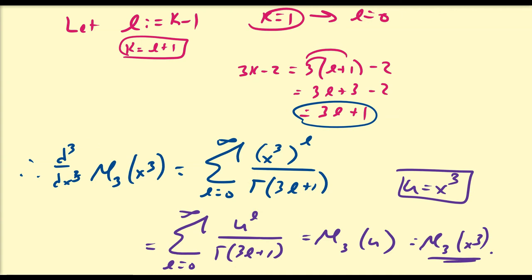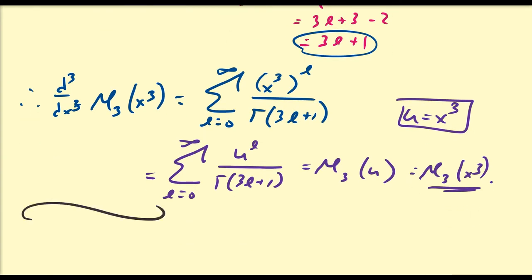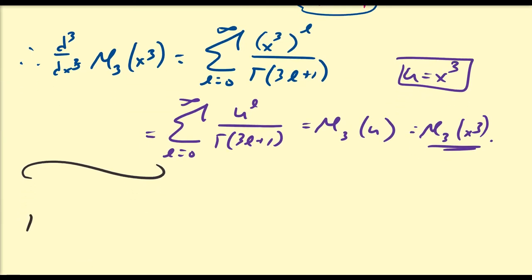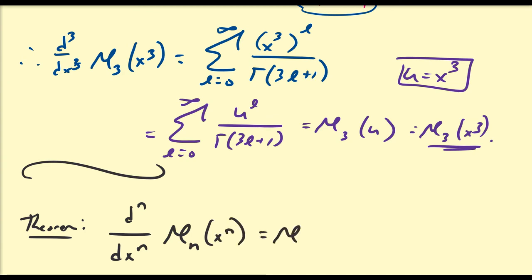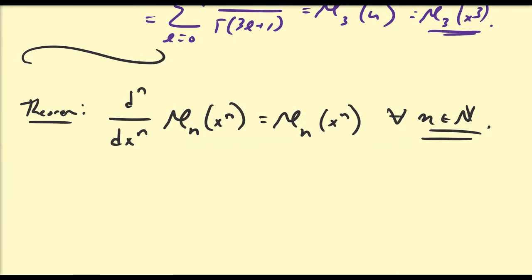This reveals an interesting property. The theorem, which can be proven by mathematical induction, states: the nth derivative of E_n(x^n) equals E_n(x^n), for all n in the natural numbers.